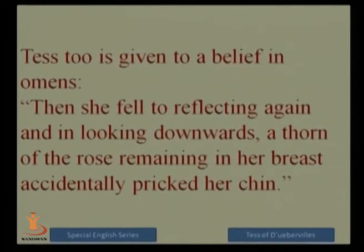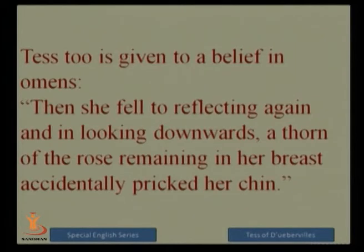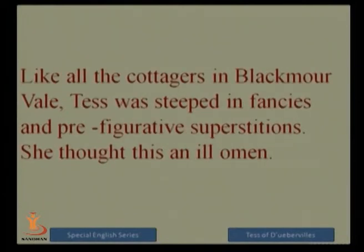Tess is also given to a belief in romance and omens. When she fell to reflecting and looking downwards, a thorn of the rose accidentally pricked her chin — which is suggestive of her superstitious nature. Like all other cottagers in Blackmoor Vale, Tess was steeped in fancies and prefigurative superstitions. She thought this an ill omen — meaning Tess believed in both good omens and ill omens.